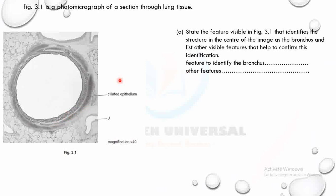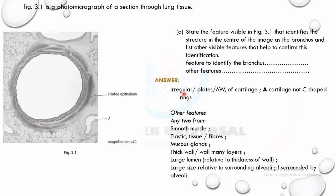Other features of the bronchus include: ciliated epithelium, goblet cells, mucus glands, smooth muscle, elastic fibers, thick wall, large lumen, and large size relative to surrounding alveoli. Remember: irregular or plate-like blocks of cartilage indicate bronchus; C-shaped cartilage indicates trachea. That's three marks.